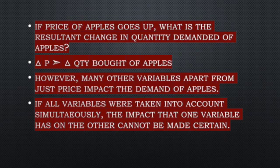If all variables were taken into account simultaneously, the impact that one variable has on the other would not be made certain. So instead we like to do this one at a time, where we just assess the relationship between price and quantity while we keep all other factors that can also influence the demand of apples constant.